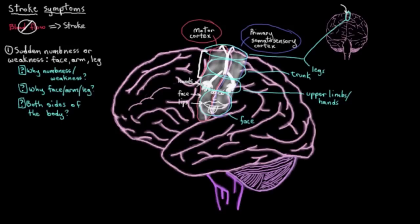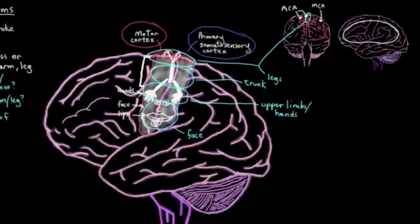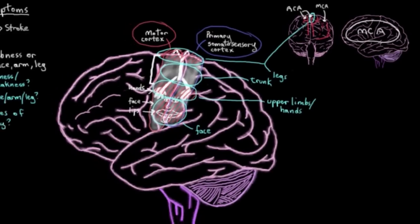So you can probably see where I'm going with this but if you get some compromise of your anterior cerebral artery, your ACA which supplies this part of your brain here you'd get possible motor or sensory symptoms in your legs or if you get some compromise of your middle cerebral artery, your MCA which supplies all of this area here you'd end up with symptoms affecting your face and your upper limbs.